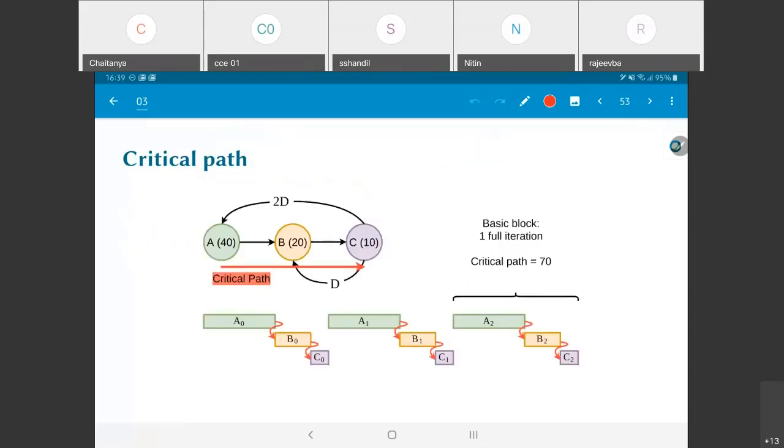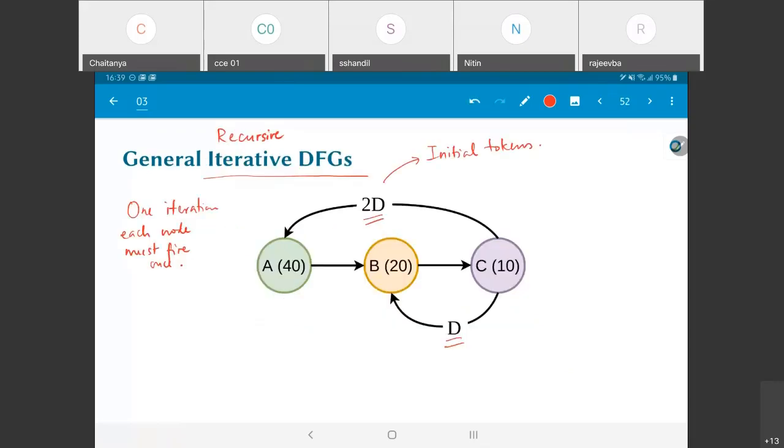So the first thing is, let us try and identify what is a possible valid firing sequence. And the first question I am going to ask is, right at the beginning, is A ready to fire? Yes, this is possible. Why? Because it has initial tokens. Is B ready to fire? And the answer is, because of this, B's dependency on A, B is not initially ready to fire.